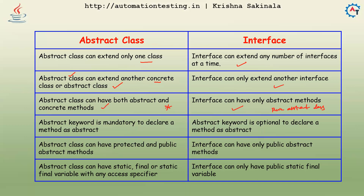The abstract keyword is mandatory to declare a method as abstract in an abstract class, because it can have both abstract and concrete methods and you need to differentiate between them. But in an interface, the abstract keyword is optional since all methods inside the interface are abstract only.